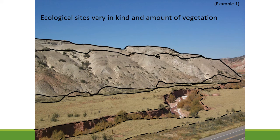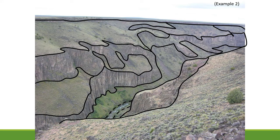Each of those ecological sites has a different ability to respond to grazing practices or to natural disturbances like fire, flood, or drought. Here's another example from Bruneau Canyon in the Owyhees. Up near the camera you can see low sage, then it gets really rocky with nearly vertical rocky points that have very little soil — a different ecological site. Down at the base of the canyon where the river flows through, there's a nice green area with greater capacity because of deeper soil and available moisture. That's three different ecological sites.